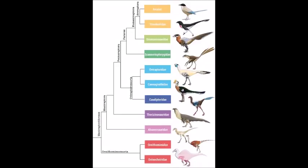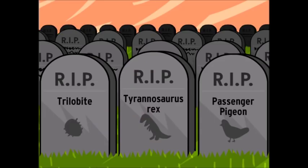Hello everyone. This series has been about how organisms develop genetic and phenotypic modifications, how those modifications proliferate throughout populations, and how populations change as a whole over time. However, we haven't yet seen what happens when a species disappears, or how that impacts other species. So let's jump right in.